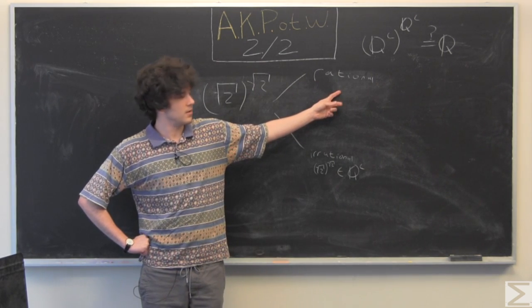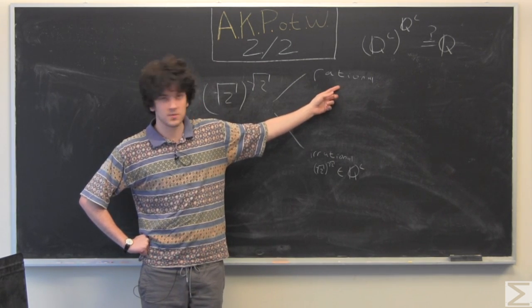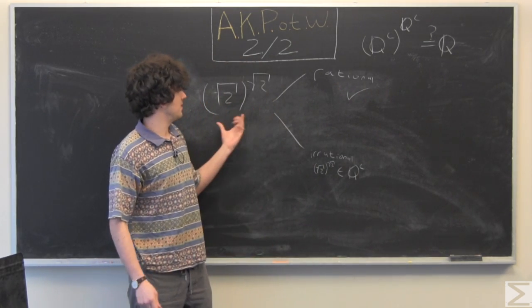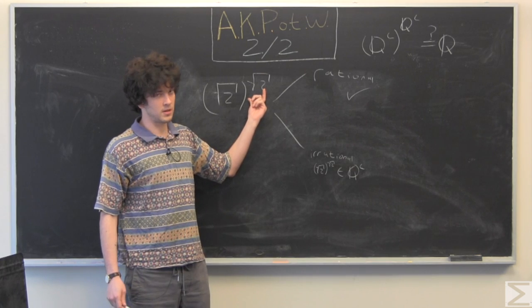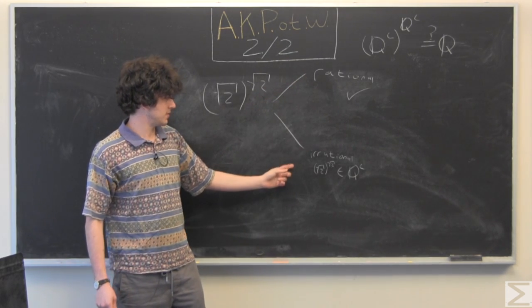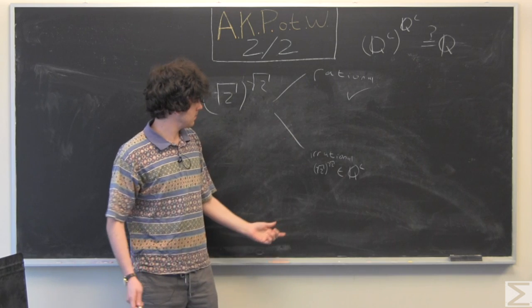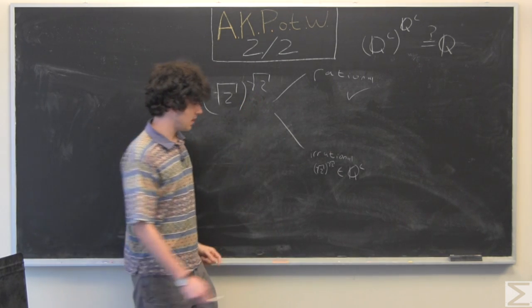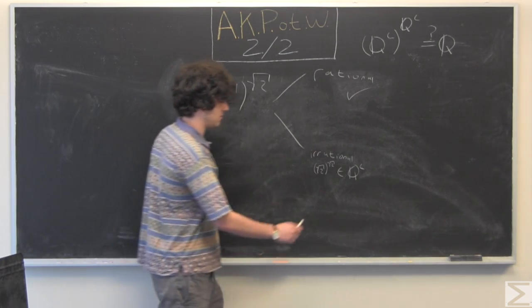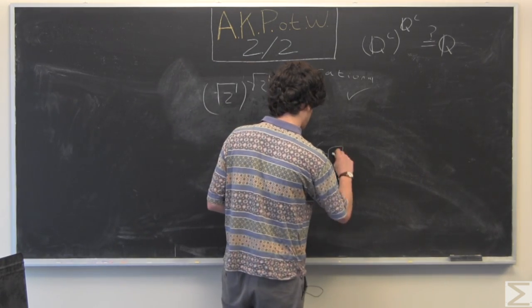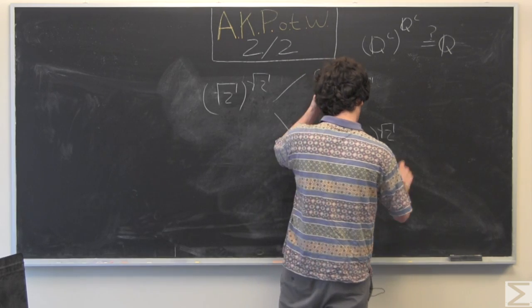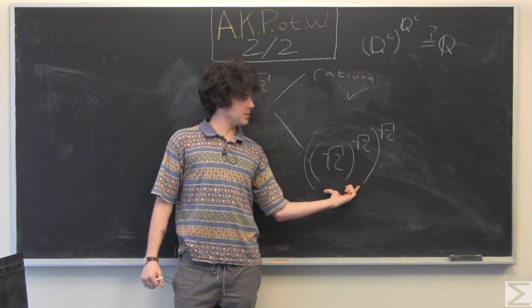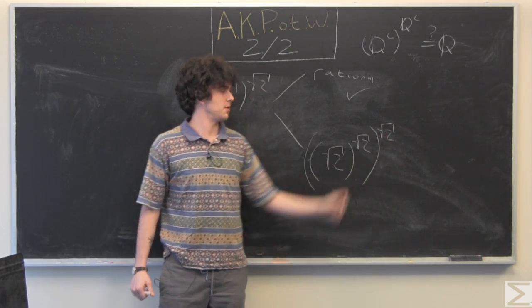So, if it is rational, then we're done. We have found an irrational raised to an irrational power, and it's rational. However, if it's not rational, why don't we just use the same square root of 2? We're going to take this irrational number, raise it to another irrational number.